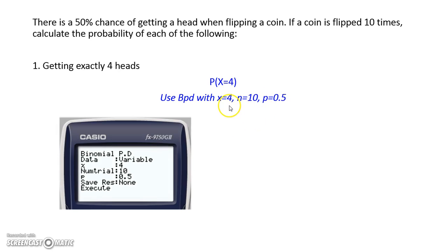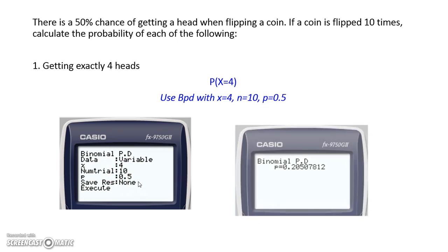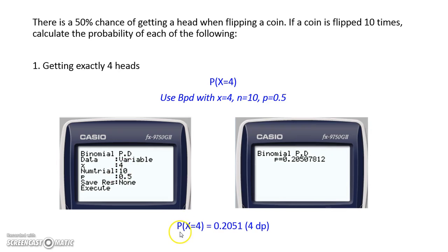This shows you the screen on your calculator. Again, if you need a bit more help with this, have a look at the accompanying video. We're in BPD, so binomial PD. We've got x equal to 4, number of trials is 10, and probability is 0.5. If we execute that, we get a probability of x equal to 4 being 0.2051 to 4 decimal places.